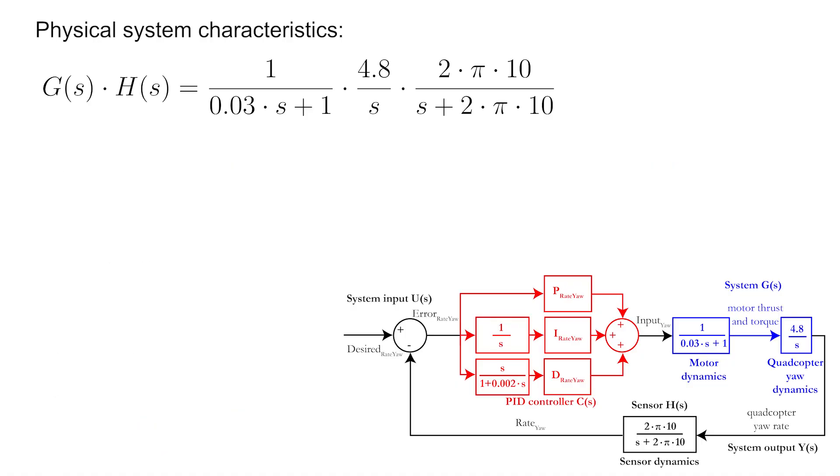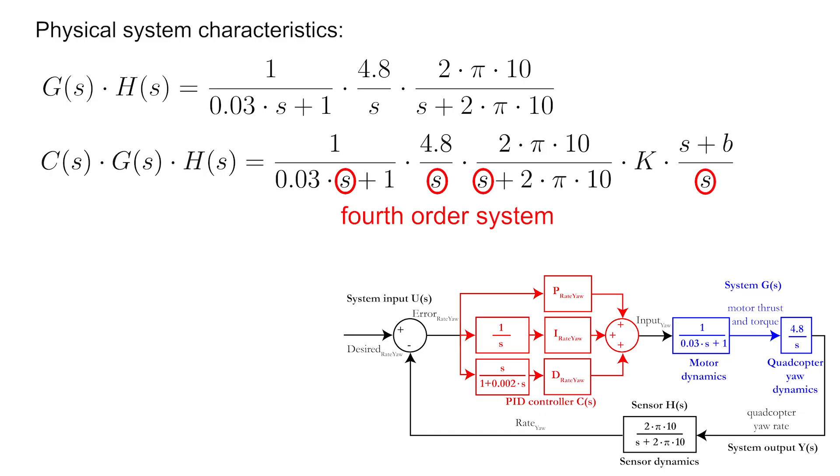First, let's go back to the open-loop system and add our new controller to the equation. This open-loop system is a fourth-order system, because the power of S in the denominator is 4. Now if we choose B to be close to 0, B will help to cancel out the two poles at 0. This means that the system will behave as a second-order system, and not as a fourth-order system.